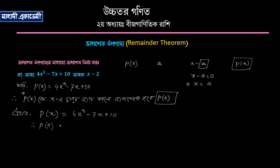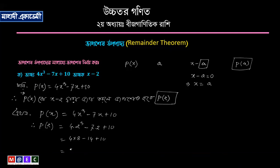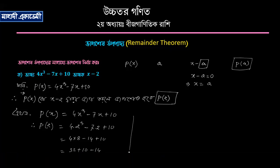If you look at p of x, then p of 2 is equal to 0, and p of x is equal to 0. So if you look at x equal to 0, then p of x is equal to 0. 42 minus 14 — how does this mean?